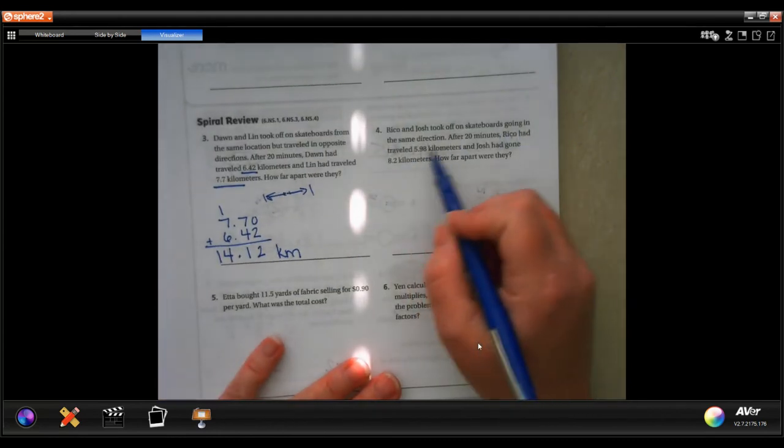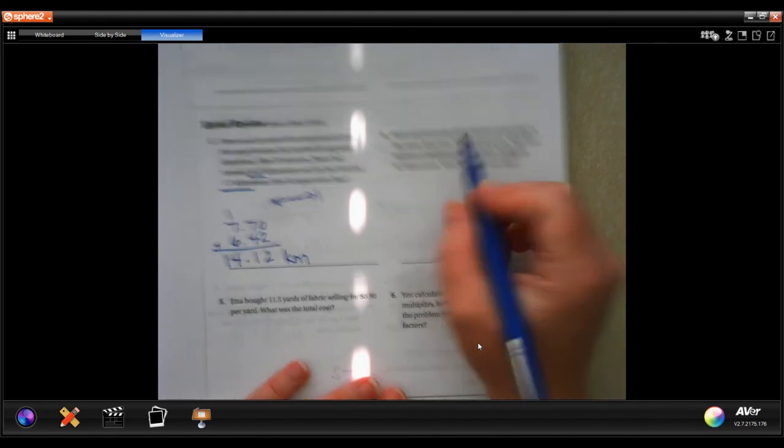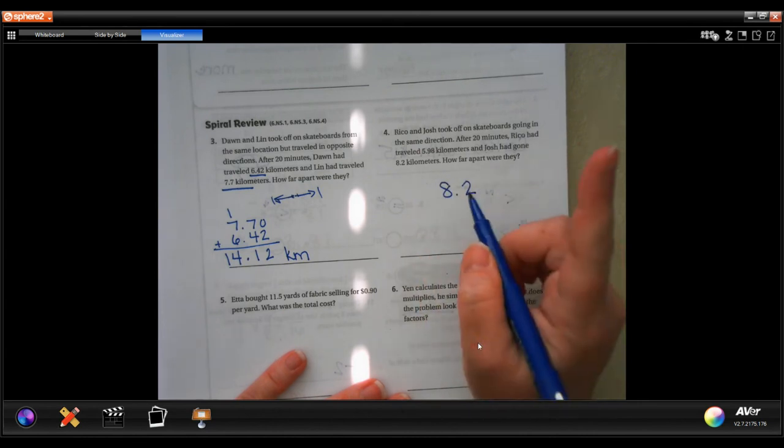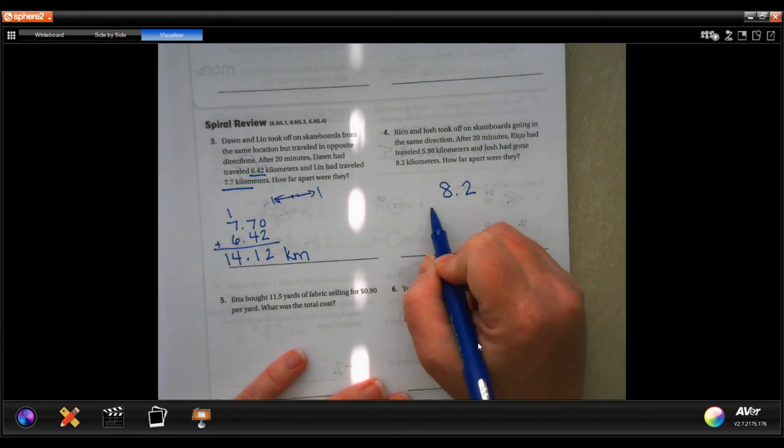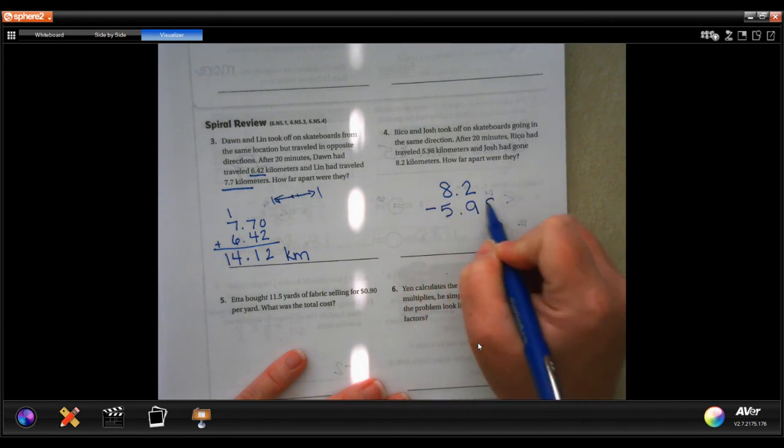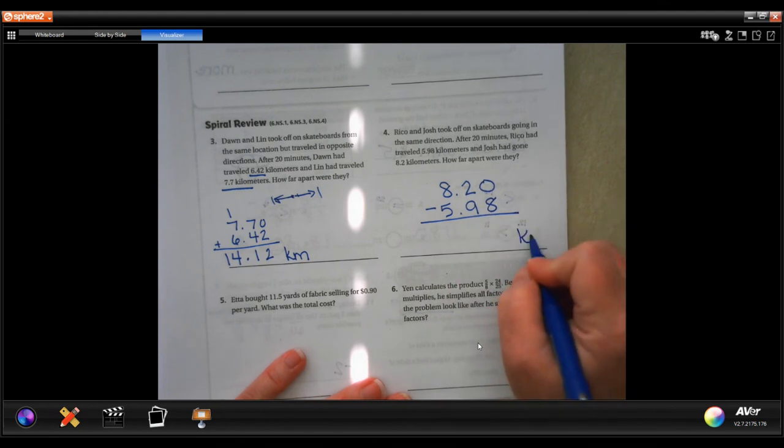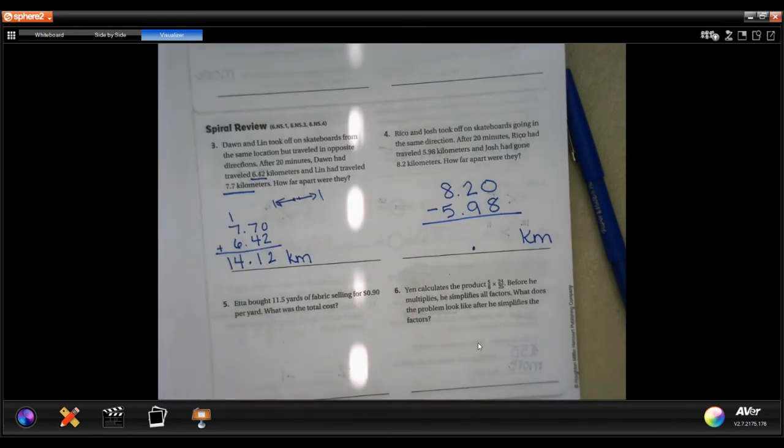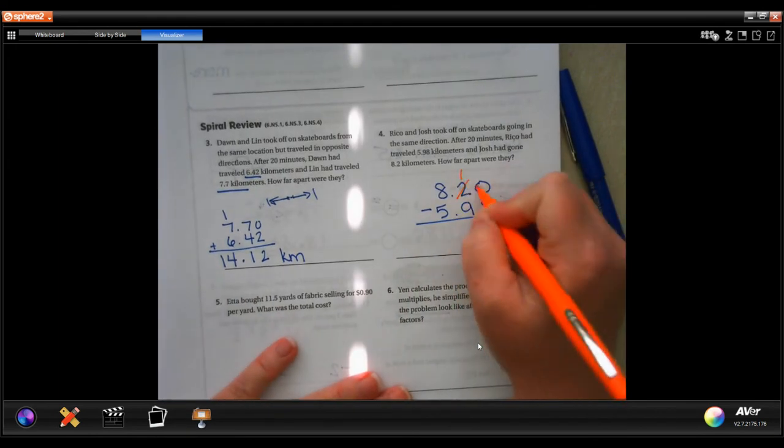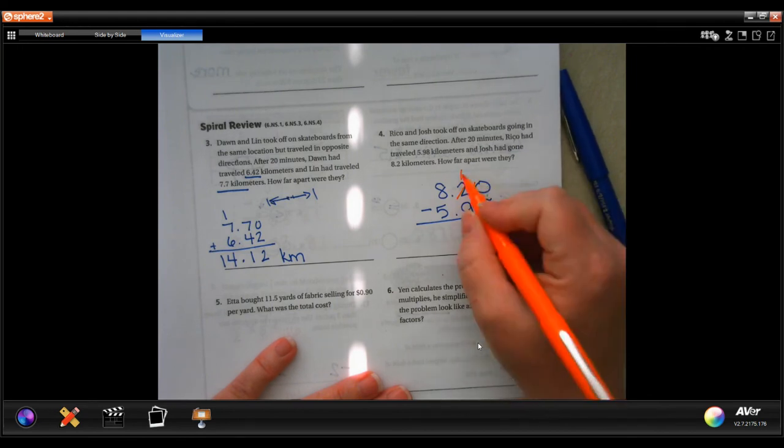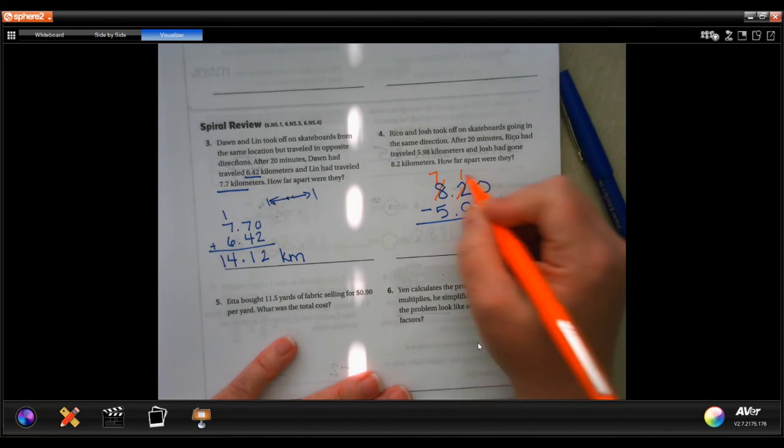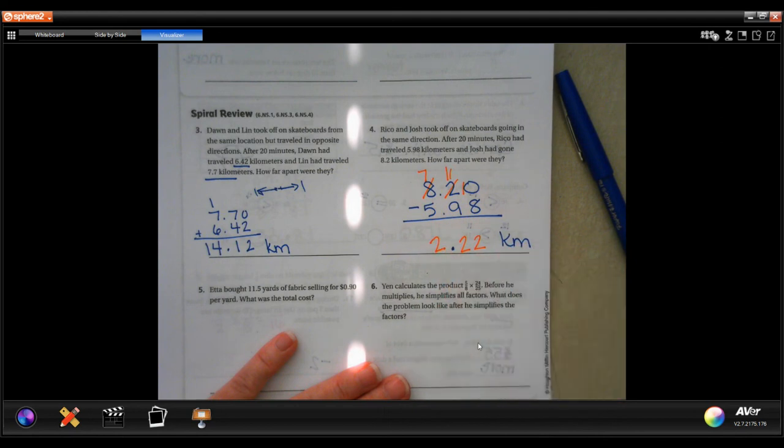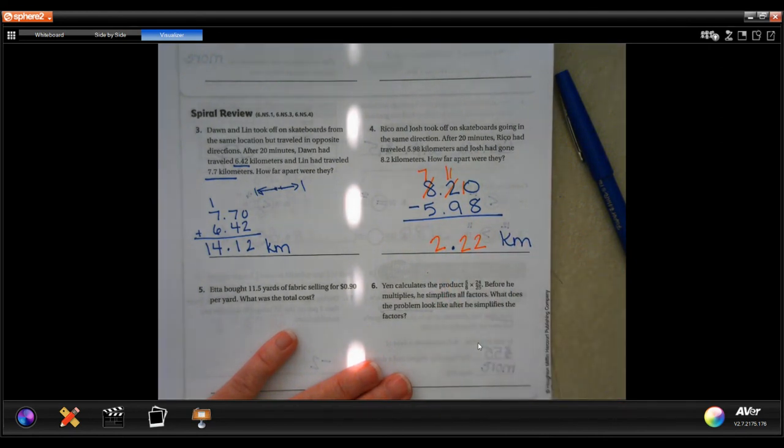Rico and Josh took off on skateboards going the same direction. After 20 minutes, Rico traveled 5.98 kilometers and Josh had gone 8.2. So here is where we're going to do subtraction because they took off in the same direction. I'm going to put my zero there. Whatever it is, it's going to be in kilometers. I'm going to drop my decimal first. Zero cannot take away eight, I need to borrow one, making it 10. 10 take away eight is two. One cannot take away nine, I need to borrow one, making that 11. 11 minus nine is two. Seven minus five is two. So 2.22 kilometers.